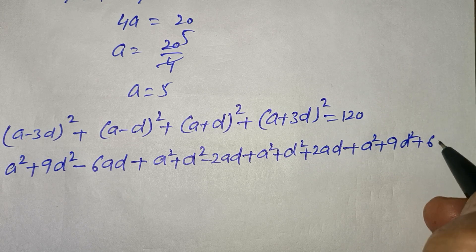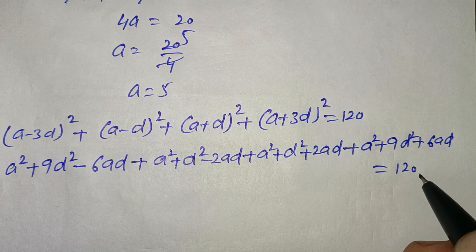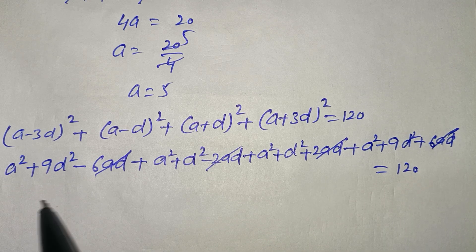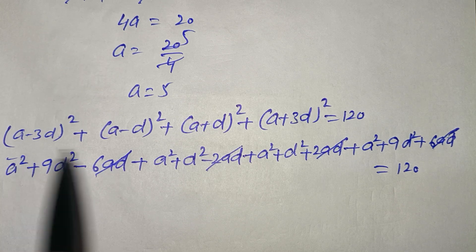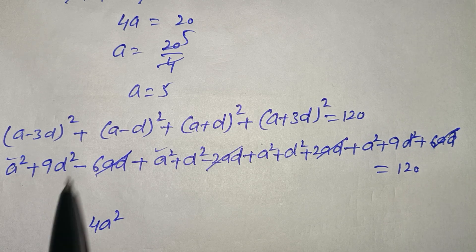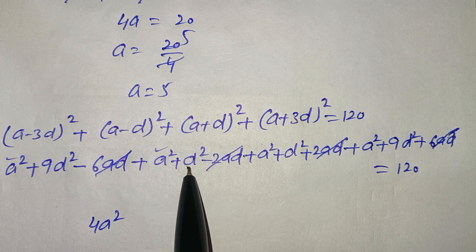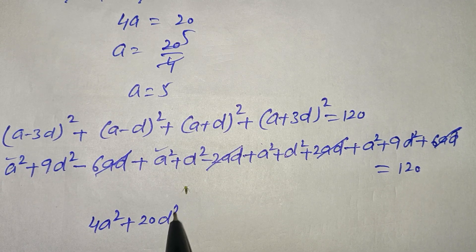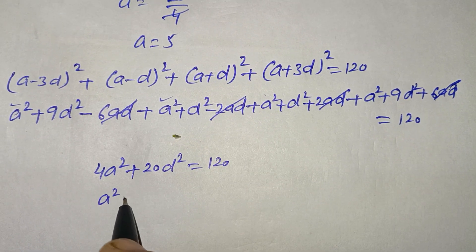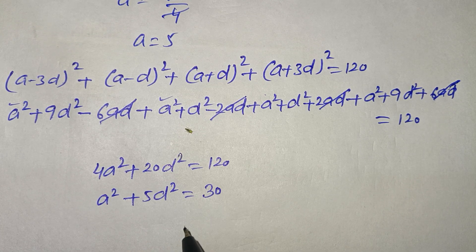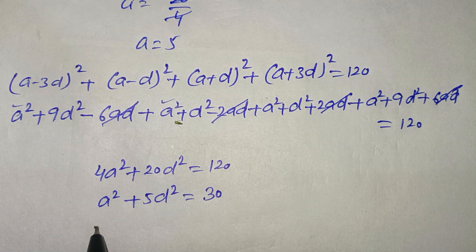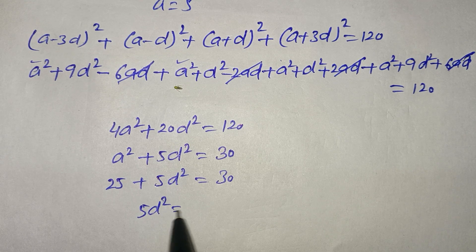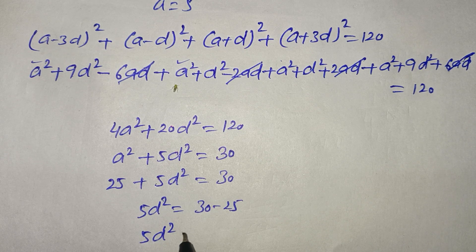After expansion and simplification, the cross terms 6AD minus 6AD cancel and 2AD minus 2AD cancel. What remains is 4A squared plus 20D squared equals 120. Dividing by 4: A squared plus 5D squared equals 30. Substituting A equals 5: 25 plus 5D squared equals 30, so 5D squared equals 5.